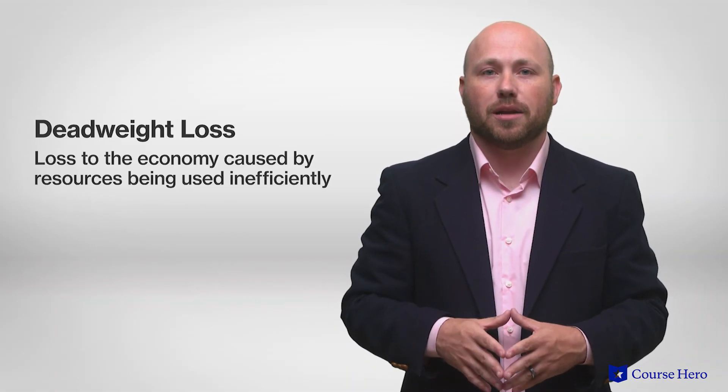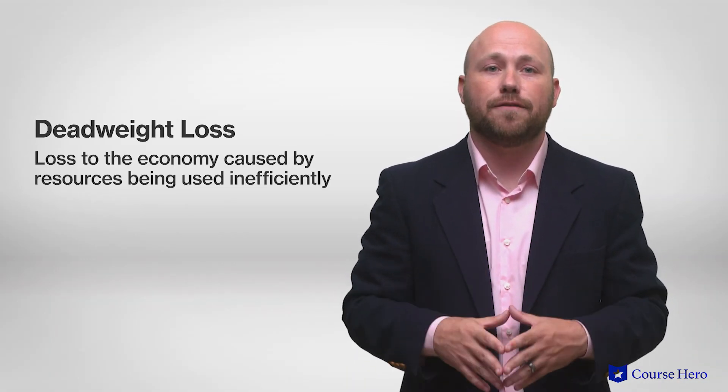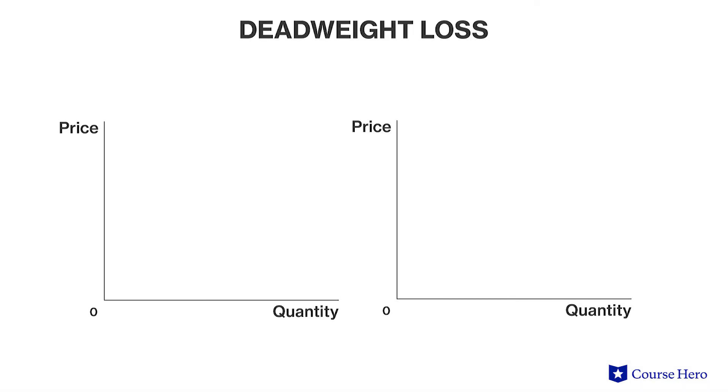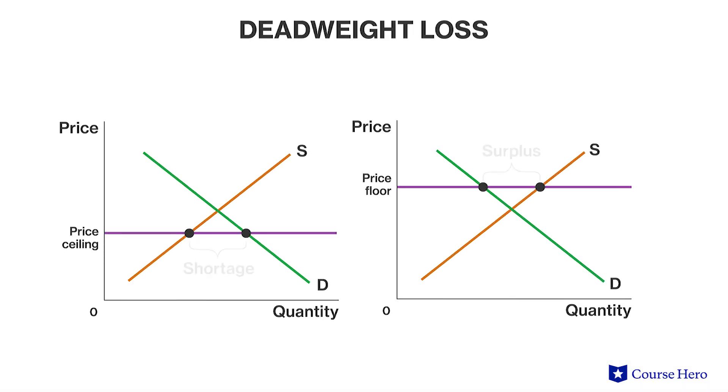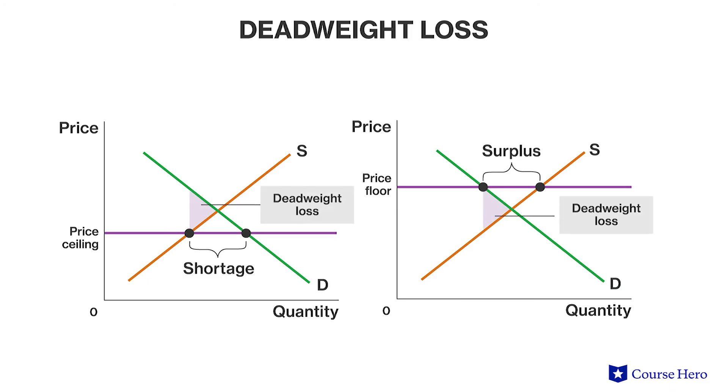Both price floors and ceilings, when binding, create deadweight loss. Deadweight loss is the loss to the economy because resources are being used inefficiently. Equilibrium prices and quantities are determined by the intersection of supply and demand, and when supply and demand are not in equilibrium, deadweight loss occurs. Although the reasons for putting price ceilings and floors in place differ, the resulting inefficiency in both cases is caused by the government imposing a price that is different from the equilibrium price.